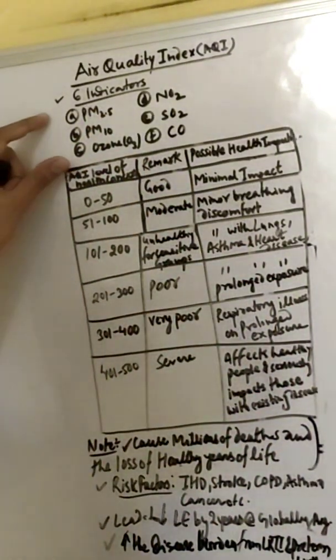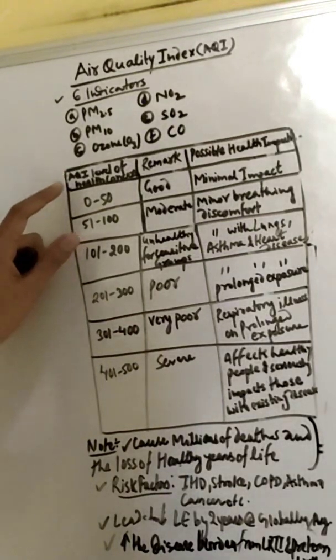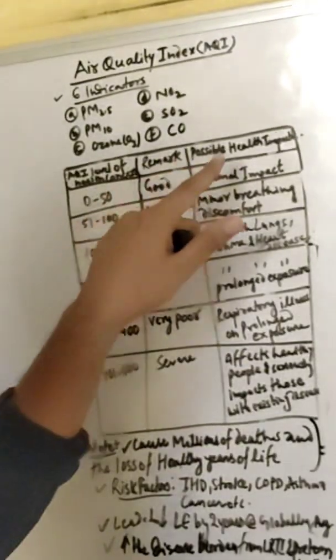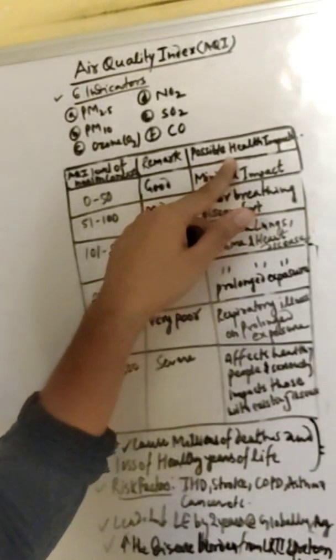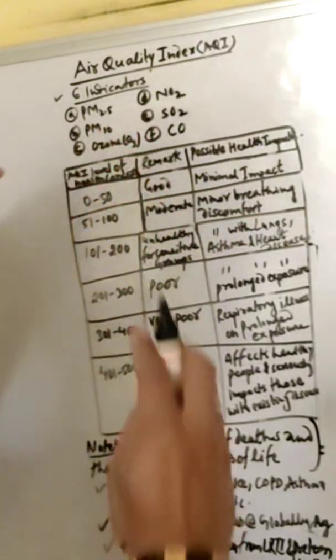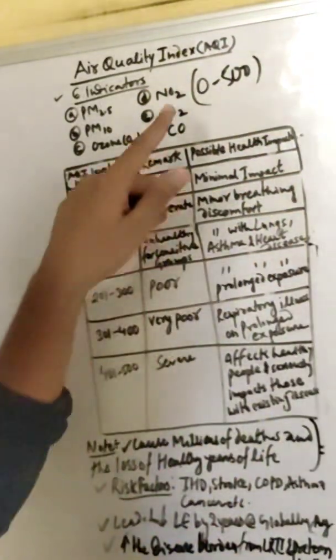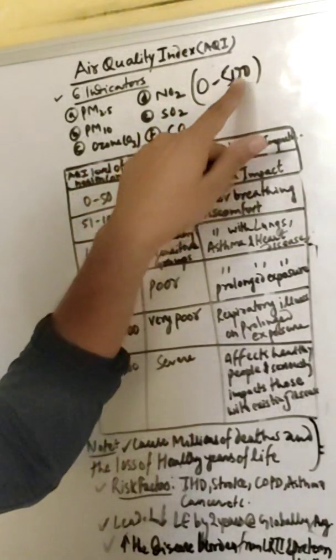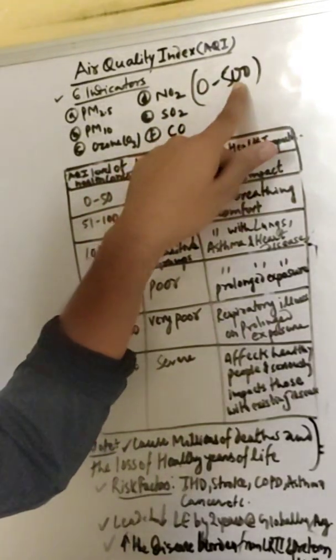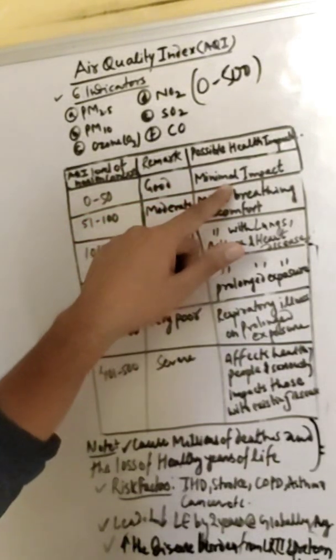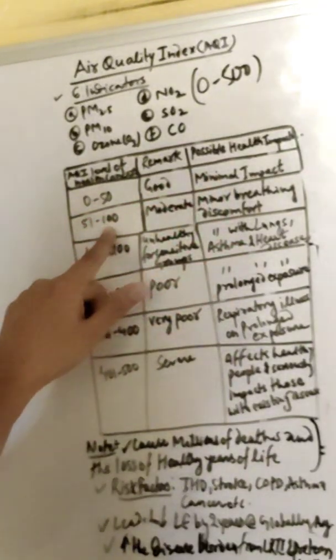These are the six indicators. Now, we are going to discuss AQI level of health concerns and the possible health impacts. The value ranges from 0 to 500. Zero is the best and 500 is the worst. Zero to 50 is good, with minimal impact on health.